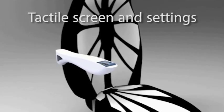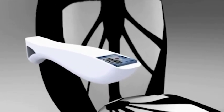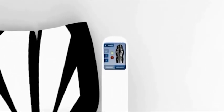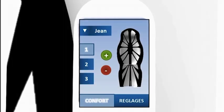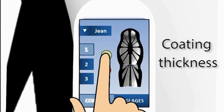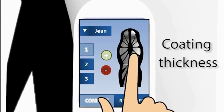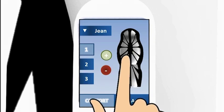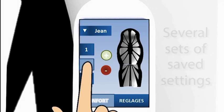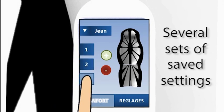One of the most important elements is the tactile screen. You can change the coating thickness by acting on the deformable blades. It's possible to save several sets of parameters.